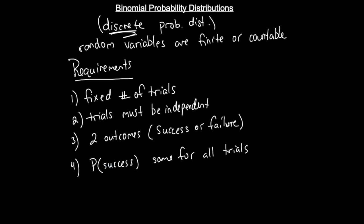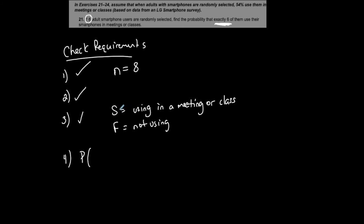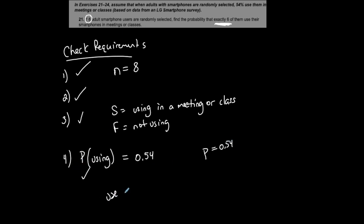Is the probability of success the same for all trials? Success is defined as using the smartphone in a meeting or class. Going back to the problem: 54% of adults use their phones in meetings or classes. So the probability of any individual using a smartphone in a meeting or class is 54%, meaning small p equals 0.54.